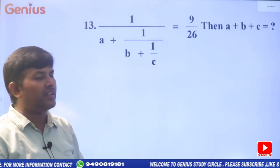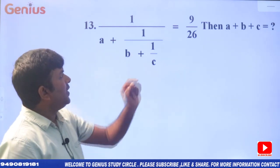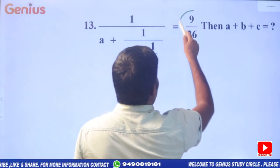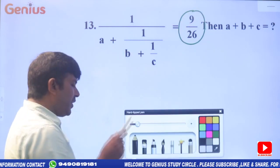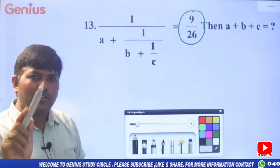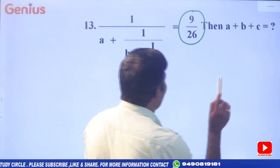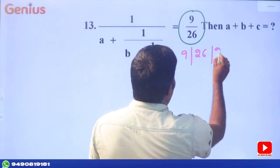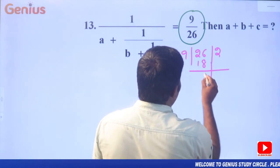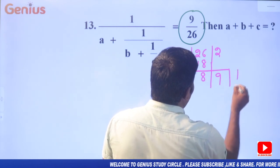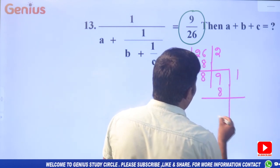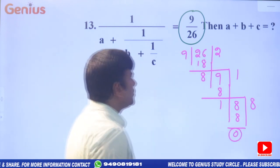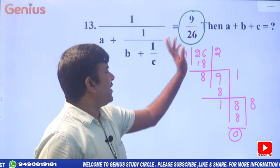The next problem type: given 1/a + 1/b + 1/c = 9/26, find the value of a×b×c. To find the a, b, c values from the fraction 9/26, we divide the denominator by the numerator using HCF (Euclidean division). We divide 26 by 9: 9 twos are 18, remainder 8.